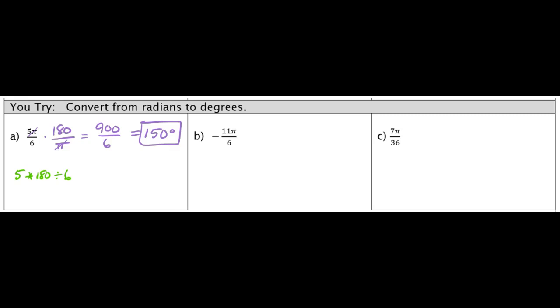So we're going to do the same thing with example B. This one's negative, but again, that doesn't change the process. It just means that our final answer will be negative. So I'm going to multiply by 180 over pi. That way the pi's cancel each other out. In my calculator, I'm going to put negative 11 times 180 divided by 6.